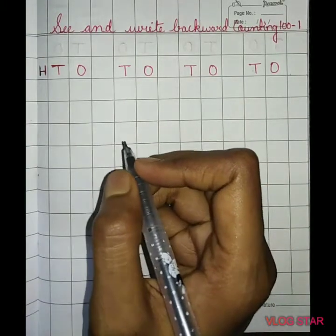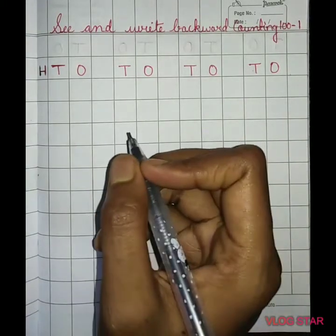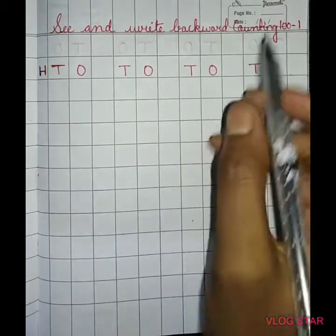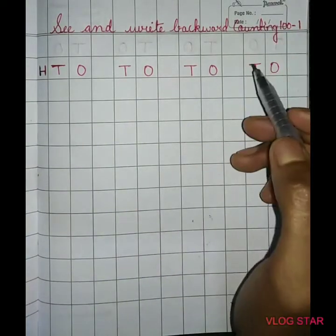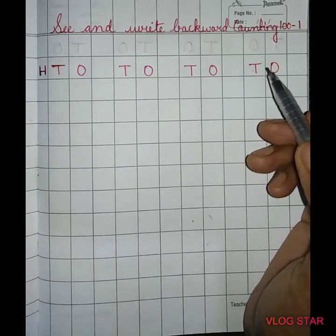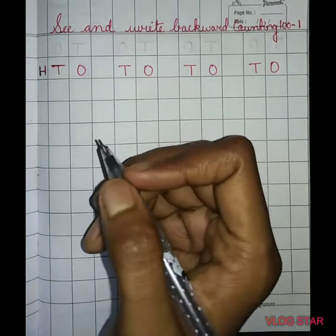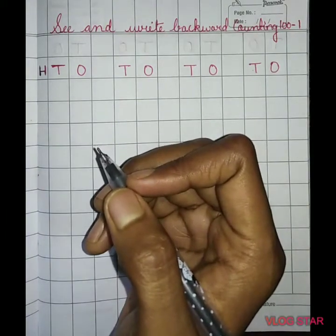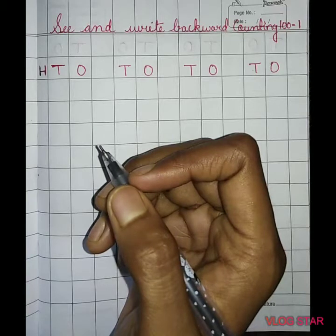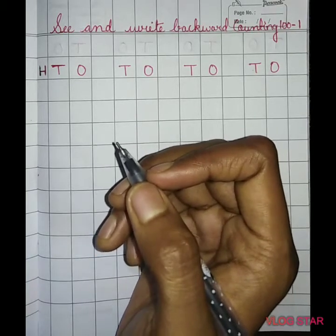Hello everyone, how are you? I hope you are all well. Today we will learn how to write backward counting from 100 to 1. Backward counting means counting which starts from back. Already we have learnt how to write 1 to 100 and today we will learn from 100 to 1. So let's start.